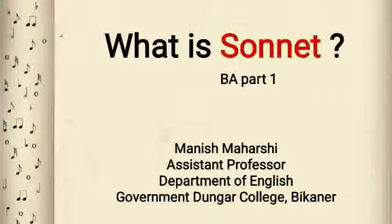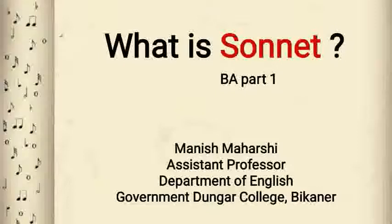A sonnet is a type of poetry written in 14 lines, having iambic pentameter and a fixed rhyme scheme most of the time. Most students confuse a sonnet with any 14-line poem, but that is not so. Any poem written in 14 lines is not a sonnet. For a poem to be a sonnet, it has to be written in 14 lines in iambic pentameter and follow a fixed rhyme scheme.